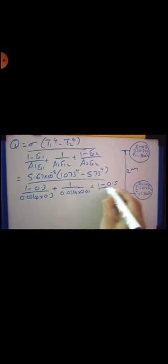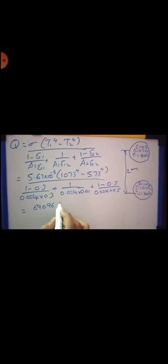The whole divided by 1 minus 0.3 divided by 0.0314 into 0.3 plus 1 divided by 0.0314 into 0.01 plus 1 minus 0.5 divided by 0.0314 into 0.5. We get the numerator 69096.91 and denominator 3288.78.